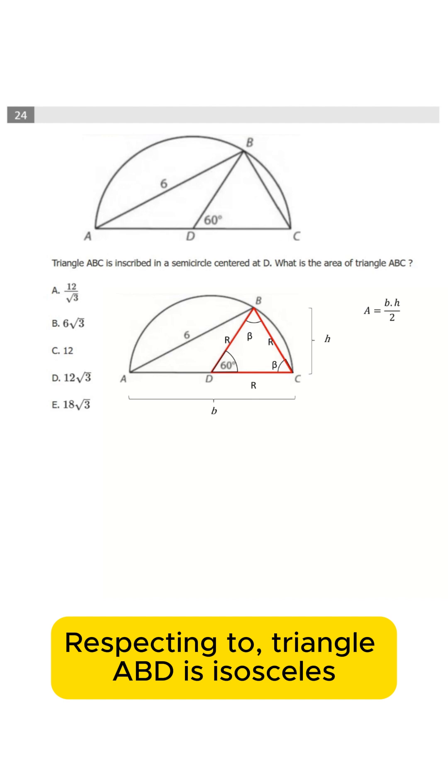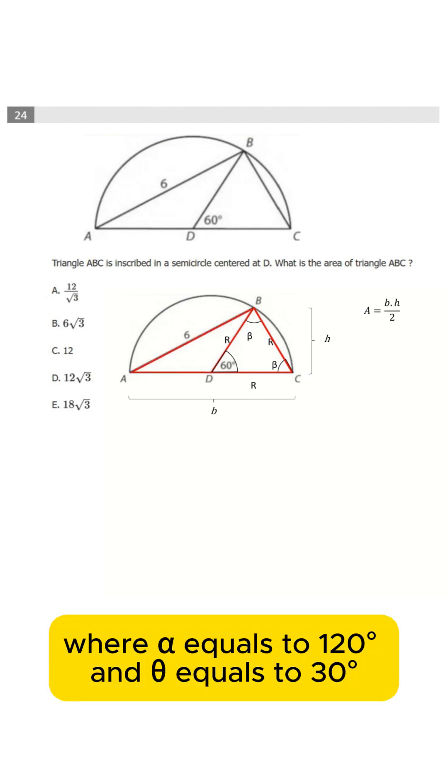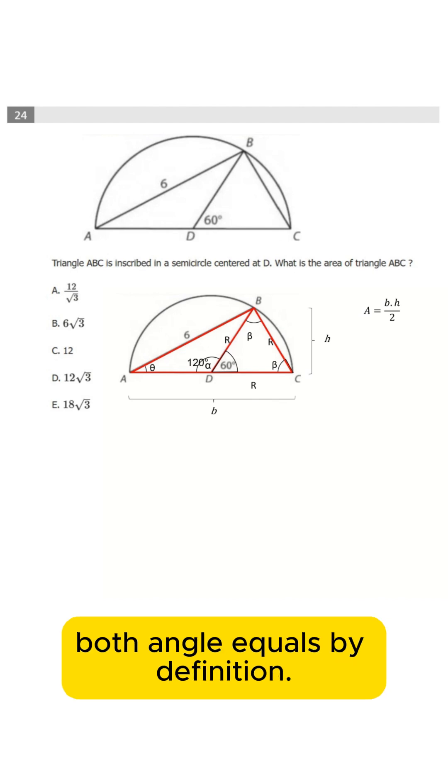Respecting triangle ABD, it is isosceles where alpha equals 120° and theta equals 30°, both angles equal by definition.